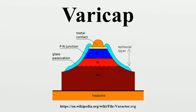Varactors are operated in a reverse biased state. No current flows, but since the thickness of the depletion zone varies with the applied bias voltage, the capacitance of the diode can be made to vary. Generally, the depletion region thickness is proportional to the square root of the applied voltage, and capacitance is inversely proportional to the depletion region thickness. Thus, the capacitance is inversely proportional to the square root of applied voltage. All diodes exhibit this phenomenon to some degree, but varactor diodes are manufactured specifically to exploit this effect and increase the capacitance, whereas most ordinary diode fabrication strives to minimize the capacitance.